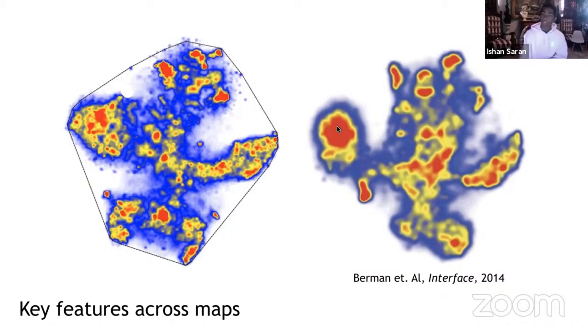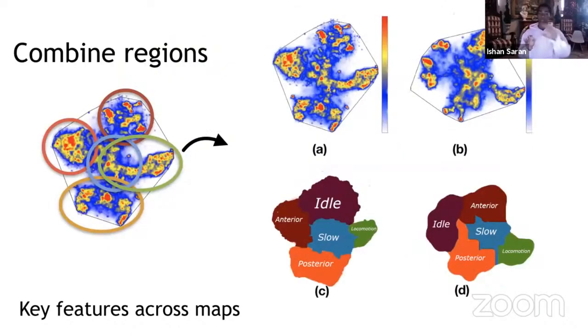These regions of high probability density correspond to stereotype movements and they're preserved across these behavioral maps, which is awesome, because it means these stereotype behaviors have a mapping that they can be identified. You take these coarse regions and create a map corresponding to what the animal is doing at any given point in time. This locomotion arc is a distinct one and corresponds to flies just walking forward, moving forward. These are some key features across maps that you can compare across animals within the same species. You can even phenotype animals based on that, which is fascinating.